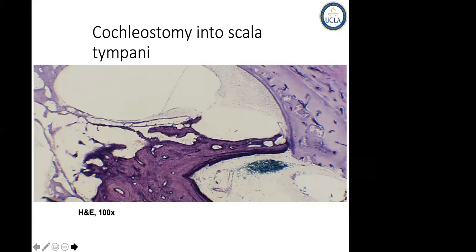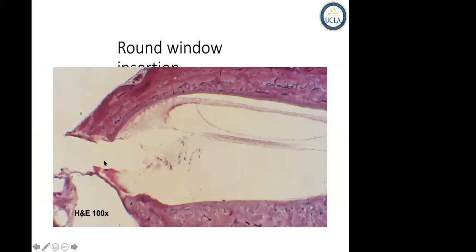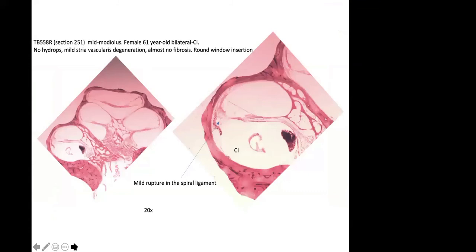This is an example of a case where the cochleostomy was performed into the scala tympani, but the fibrotic change did not involve the ductus reuniens — therefore you do not see the extension of Reissner's membrane. This other case is one that Bill House did with a round window insertion, and the scala tympani is very clean. This is another example of a patient with bilateral cochlear implants, round window insertion, demonstrating no evidence of endolymphatic hydrops.